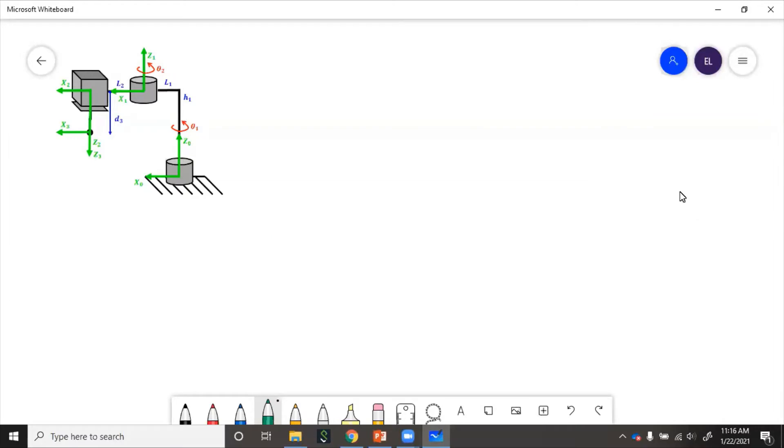Now, let's say this two-link manipulator was not actually planar and it had a third joint that's prismatic and goes in the minus z direction. How will we calculate the Jacobian for this?